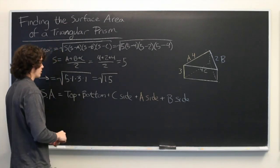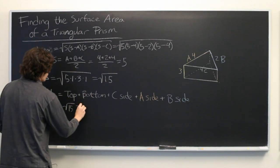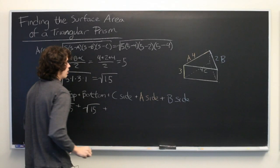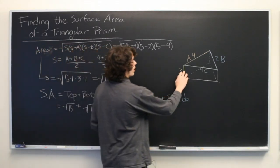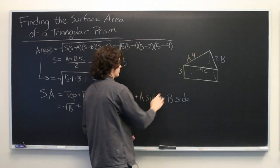So let's start computing these numbers. The top, we know, is square root of 15. Easy enough. Same thing with the bottom, square root of 15. The C side, you see we have 4 times 3, the height of the prism, which is 12.